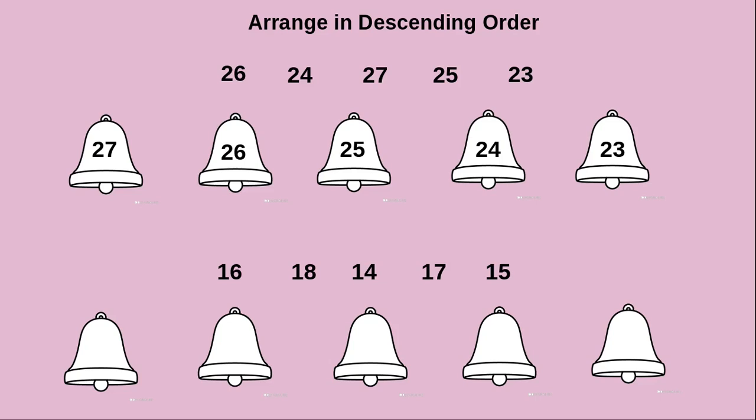Next we will move to another example. They have given 16, 18, 14, 17, 15. Which one is the greatest number here? Yes, 18 is the greatest number, so we write 18 first. Next is 17, then 16, then 15, and at last 14. Now we all know how to arrange numbers in descending order.